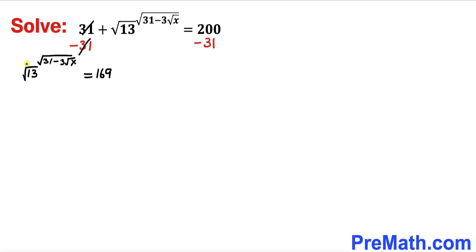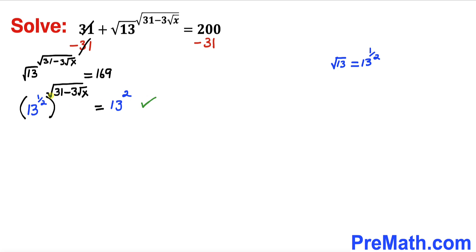Now let's make an observation. The square root of 13 can be written as 13 to the power of 1 divided by 2. Likewise, on the right hand side, 169 is the same as 13 squared. So I have replaced square root of 13 with 13 to the power of 1/2, and replaced 169 with 13 squared.